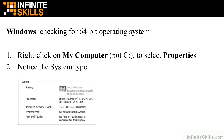If you're working with a Windows computer, first we want to check to make sure it's got a 64-bit operating system. It varies exactly where to go depending on the Windows version, but basically you want to locate My Computer, which you'd generally find in Windows Explorer. Right-click on My Computer and select Properties, and once you do that you can see the system type — as you see in the screenshot, it shows a 64-bit operating system.